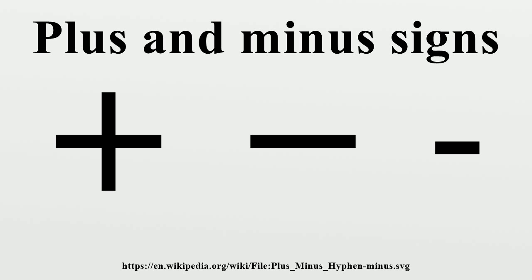The plus sign is a binary operator that indicates addition, as in 2 plus 3 equals 5. It can also serve as a unary operator that leaves its operand unchanged. This notation may be used when it is desired to emphasize the positiveness of a number, especially when contrasting with the negative. The plus sign can also indicate many other operations depending on the mathematical system under consideration. It is conventional to use the plus sign to only denote commutative operations.